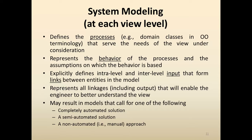In system modeling, at each view level, the process defines domain classes in object-oriented terminology that serve the needs of the view under consideration. It represents the behavior of the processes and the assumptions on which the behavior is based. It explicitly defines intra-level and inter-level inputs that form links between entities in the model, and represents all linkages that enable the engineer to better understand the view. This may result in models that call for a completely automated solution, a semi-automated solution, or a non-automated manual approach.